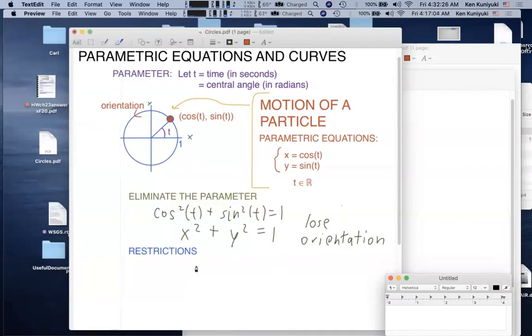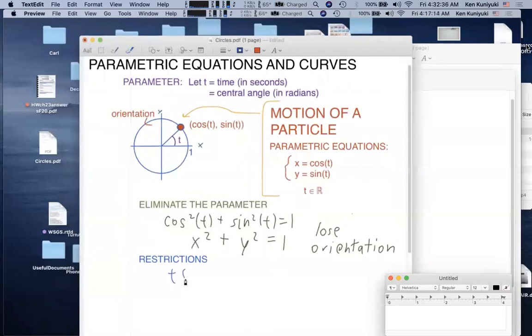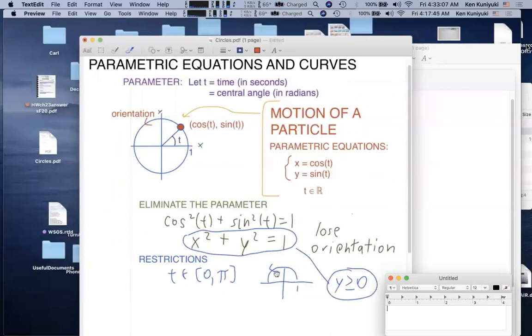Now, sometimes there are restrictions. So for example, let's say that instead of allowing the parameter t to vary over all reals, let's say that t is only allowed to go from zero radians to pi radians. If that's the case, what part of this curve do we pick up? We only pick up the top half of the unit circle. We indicate orientation again. And when we eliminate the parameter, we again get x squared plus y squared equals 1. But since we're only picking up the top half of the unit circle, we need to put a restriction. For example, y has to be non-negative. We pick up only the points on the curve where y is non-negative.